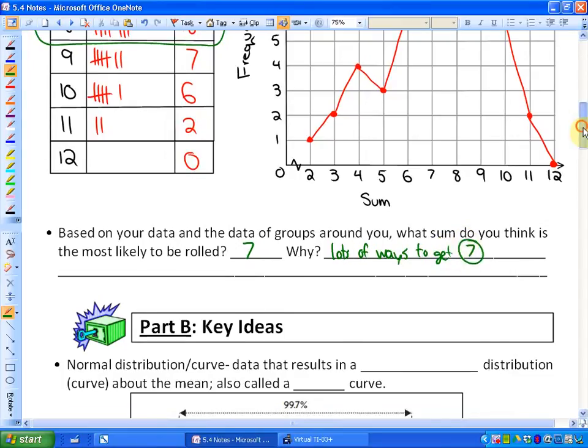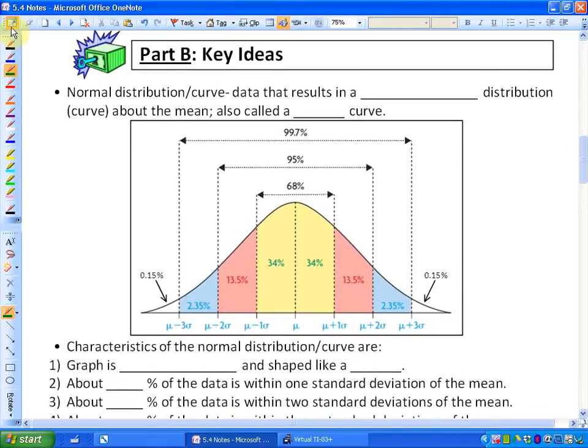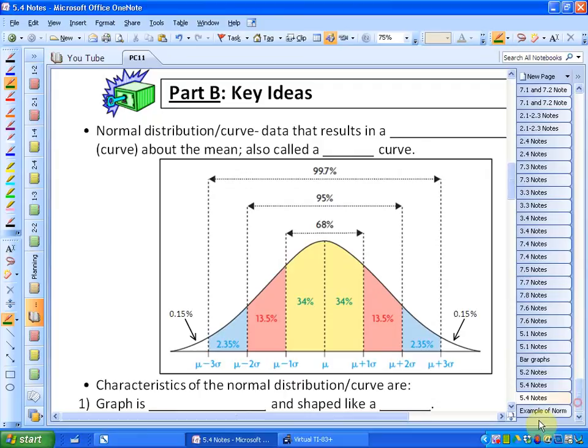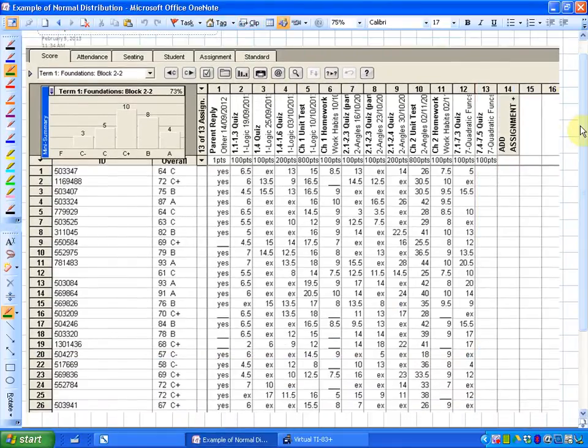And there are lots of ways. This is the reason. There's lots of ways to get seven as a sum. Okay? So part B, the key ideas is let's define a normal distribution, or let me just show you another example of a normal distribution. Here's the grade book of one of my classes. And what you'll notice here,